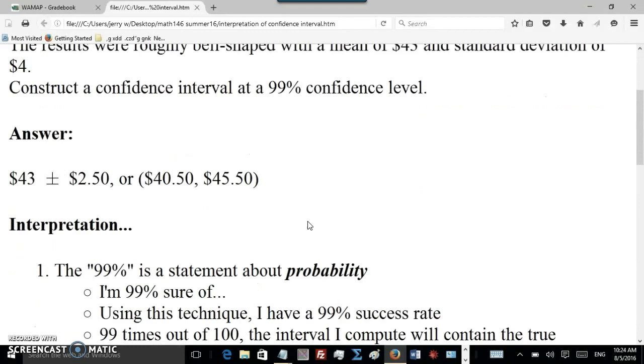And now the answer, which I'm not going to explain because that's not the point of this video. The answer was computed to be $43 with a margin of error plus or minus $2.50, or if you add and subtract the margin of error, $40.50 to $45.50. Okay, now this video explains how to explain that answer right there. So here's the interpretation.